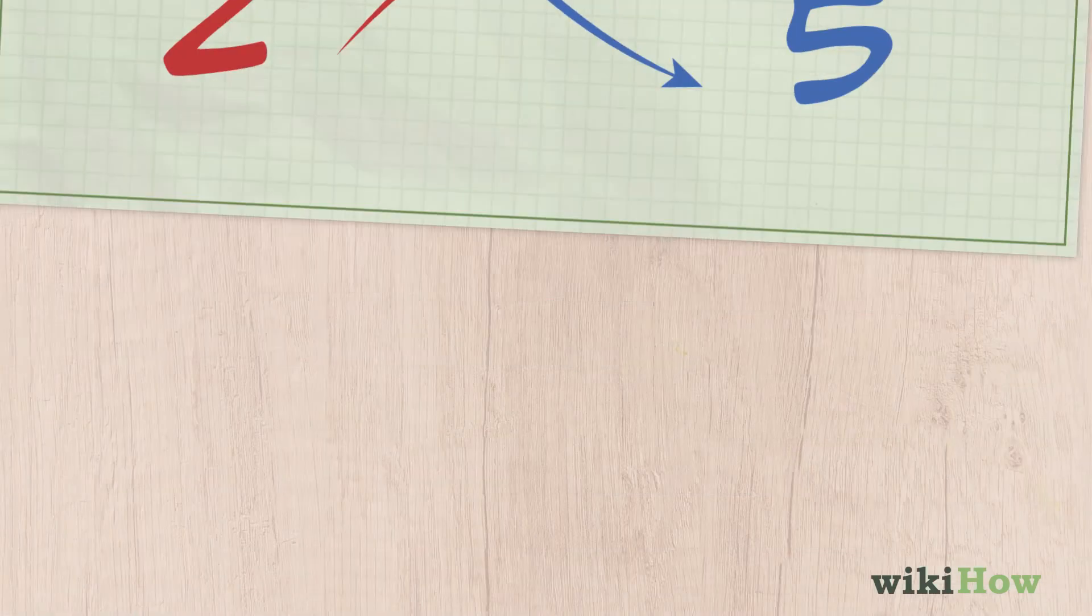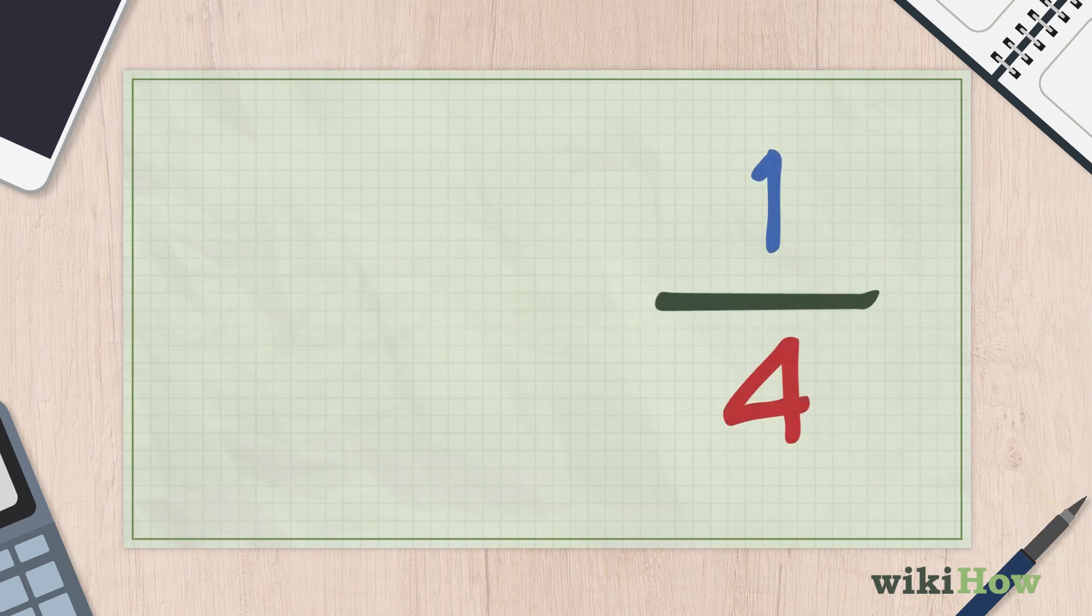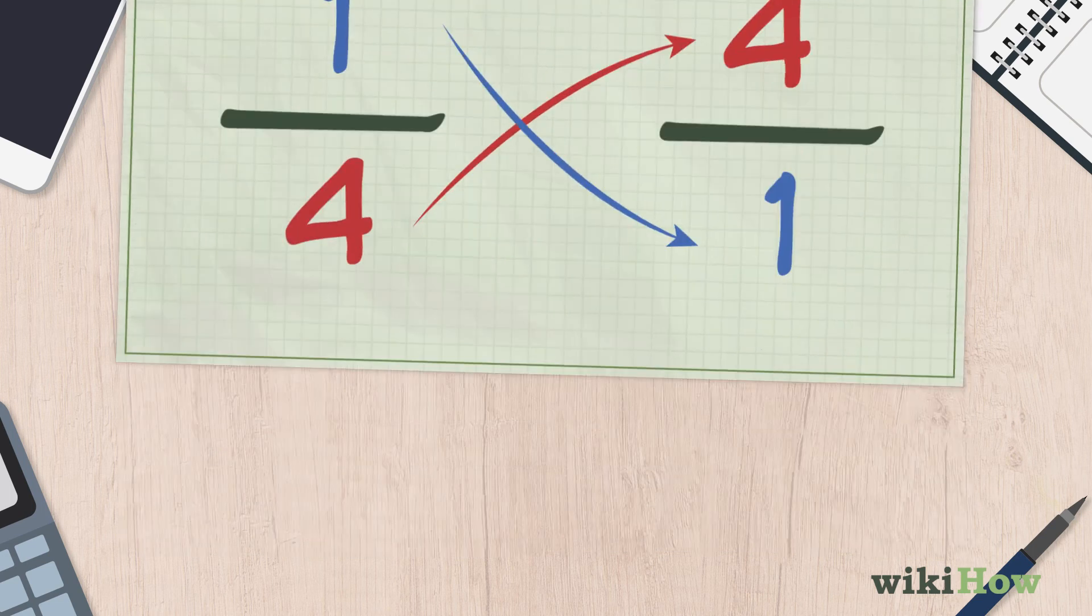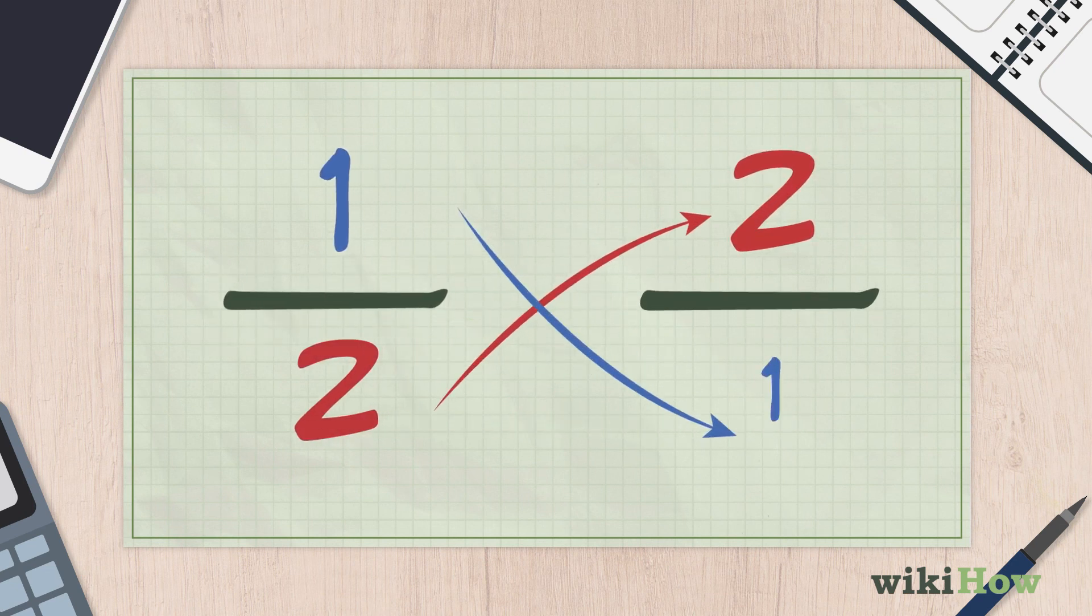To find the reciprocal of a decimal, convert the decimal to a fraction first if you can, then invert it. For example, 0.5 is equal to 1 half, which would give you a reciprocal of 2 over 1, or 2.